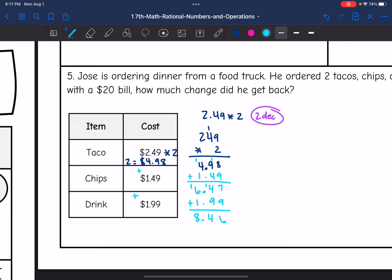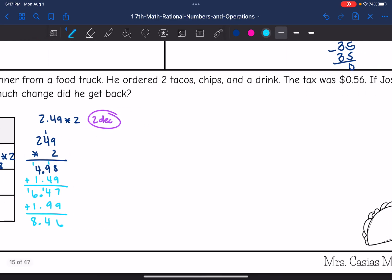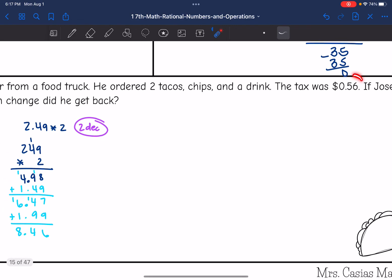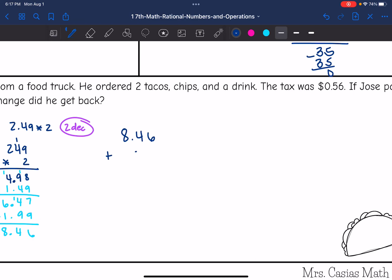So he paid $8.46 for the food and now he is going to have a $0.56 tax. Now I'm going to do the $8.46 plus $0.56 to figure out how much he paid in total. So 6 plus 6 is 12, 1 plus 4 plus 5 is 10, 1 plus 8 plus 0 is 9. So he paid $9.02.